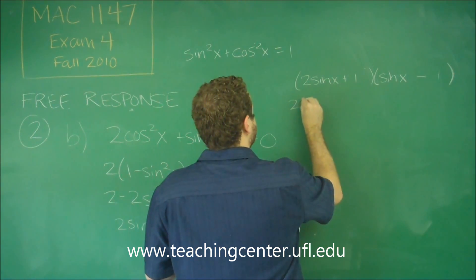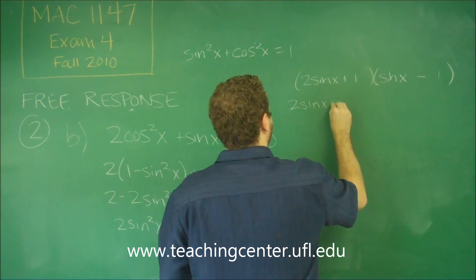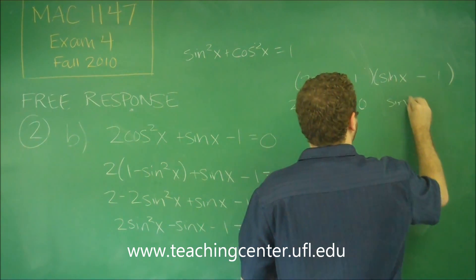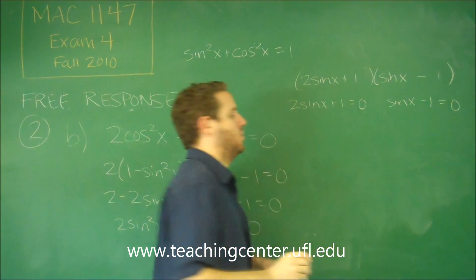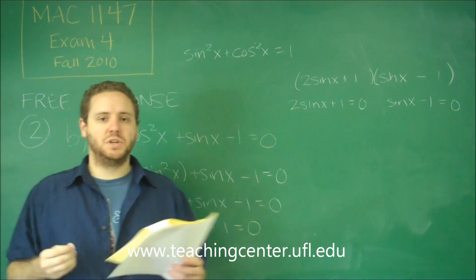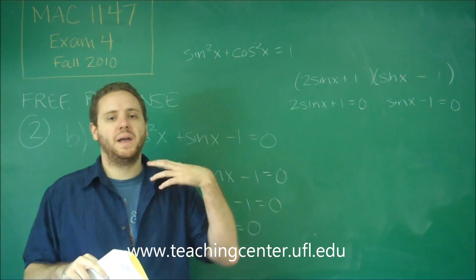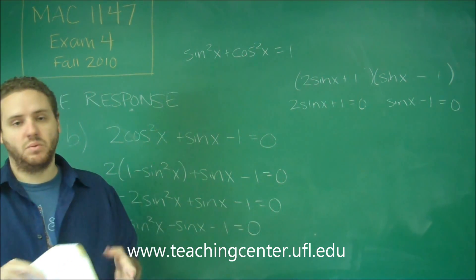So we have 2 sine x plus 1 equals 0, or we have sine x minus 1 equals 0. Those are our two potential solution equations. Now these boil down to kind of what we did in problem 2a, just solve for sine x and see what we get.